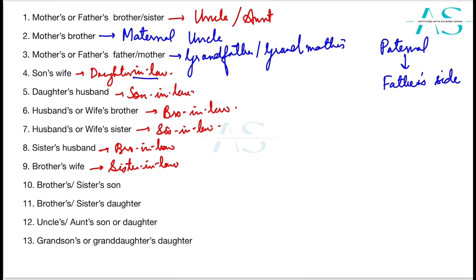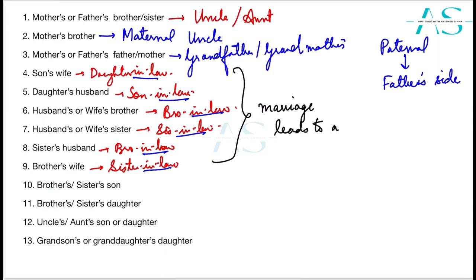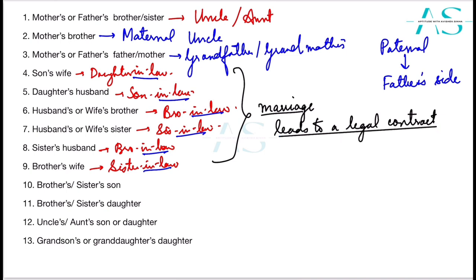You may wonder why we use the term in-laws here. In-laws refers to relations formed after marriage — marriage leads to a legal contract between two parties. When you form this contract, these relations are given through law and are legally binding. That is why we write the word in-laws.